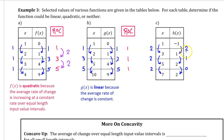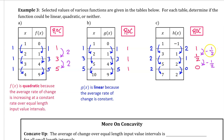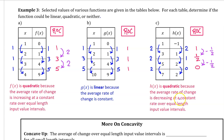Part c — here are the changes in output and the changes in input. Notice that we do have equal length input value intervals. Dividing the change in output by the change in input gives us the average rate of change for each interval. We can see that h of x is not linear because the average rate of change is not constant. However, the average rate of change is decreasing at a constant rate — it is going down by one half each time. So h of x is quadratic because the average rate of change is decreasing at a constant rate over equal length input value intervals.